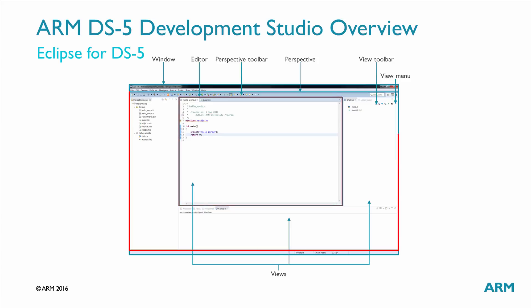Perspectives and Views: Perspectives provide customized views, menus, and toolbars to suit a particular type of environment. DS5 uses ARM assembly language as well as C, C++, the DS5 debug, and DS5 configuration perspectives.